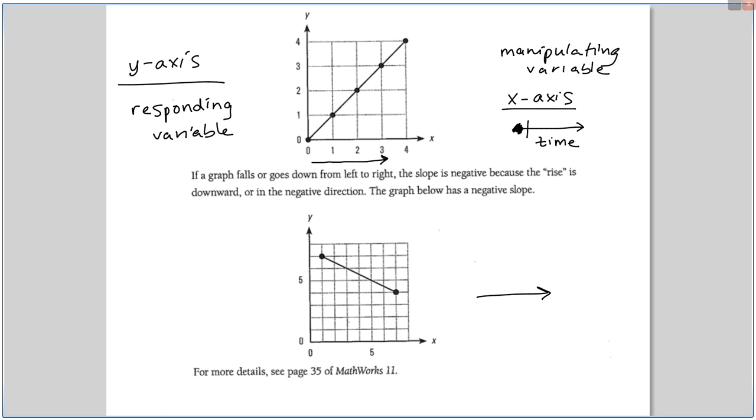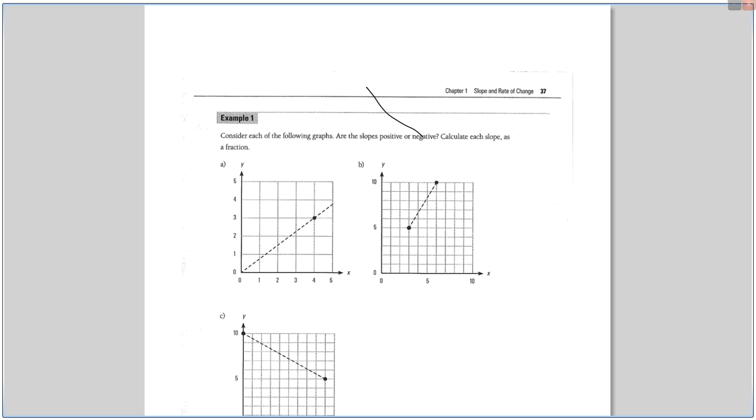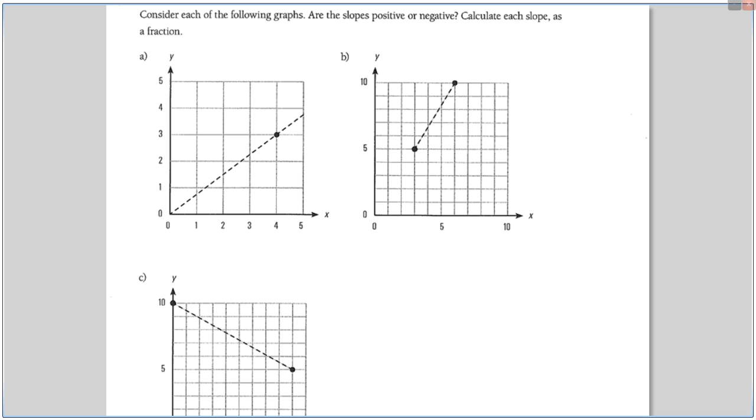Continuing on, we understand that if the graph is rising to the right, it's positive, and if it's falling to the right, it's negative. So example one, all you have to do looks like is consider whether it's positive or negative, and then calculate the slope as a fraction. So, in the past couple days, we've been talking about slopes without whether it being positive or negative, and in this section, we'll have to give it a sign. Slopes can either be positive or slopes can be negative.